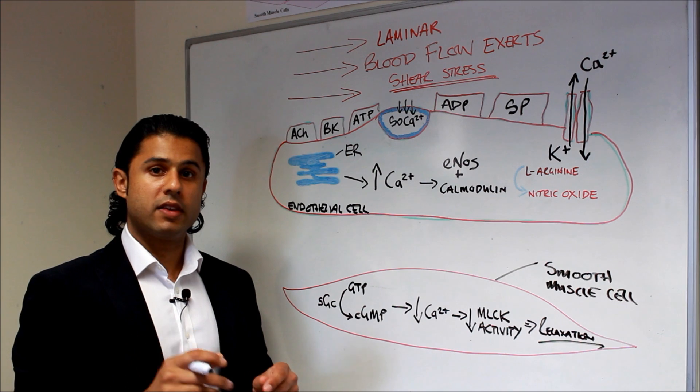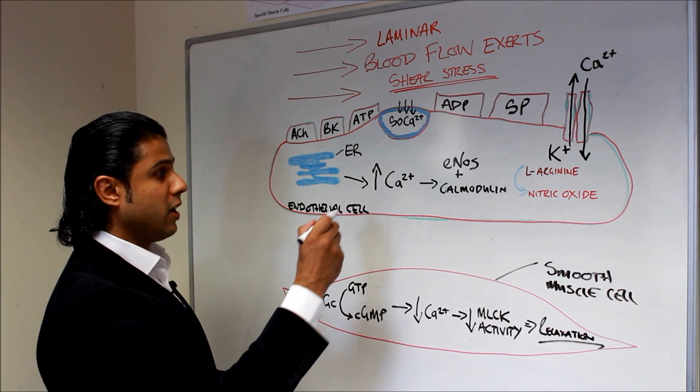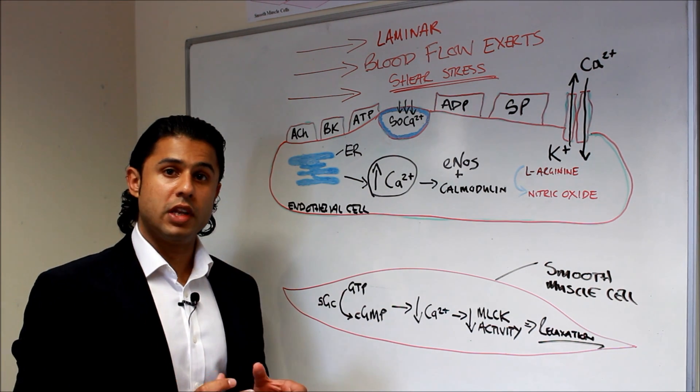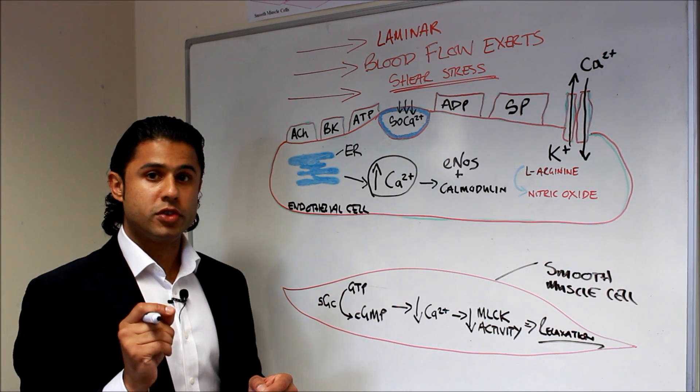In order for us to get an increase in nitric oxide, we need to increase the amount of calcium within the endothelial cell because as we'll see in just a moment,